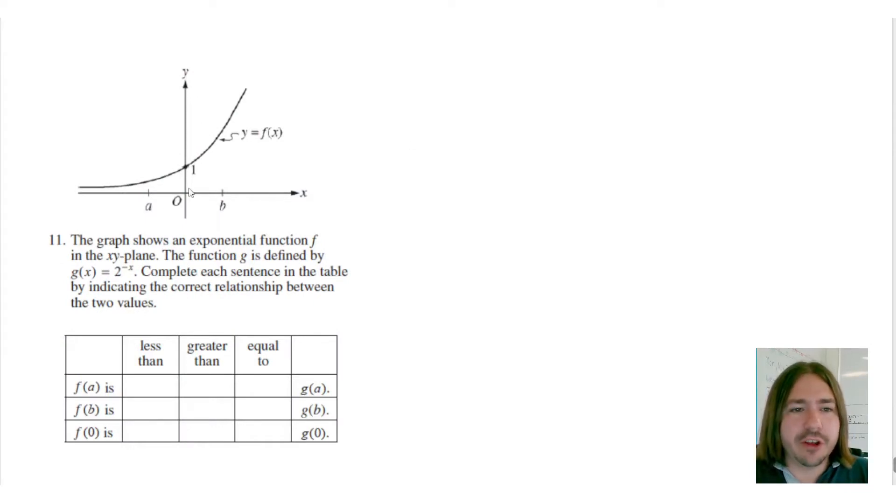On number 11, we're given a graph that's defined as f of x, and then we're given an equation here that's defined as g of x, and g of x is 2 to the power of negative x. And what we're supposed to do here is complete these sentences where we're determining essentially which value is greater. Is f of a greater or g of a greater? Is f of b greater or g of b? Or are they the same?